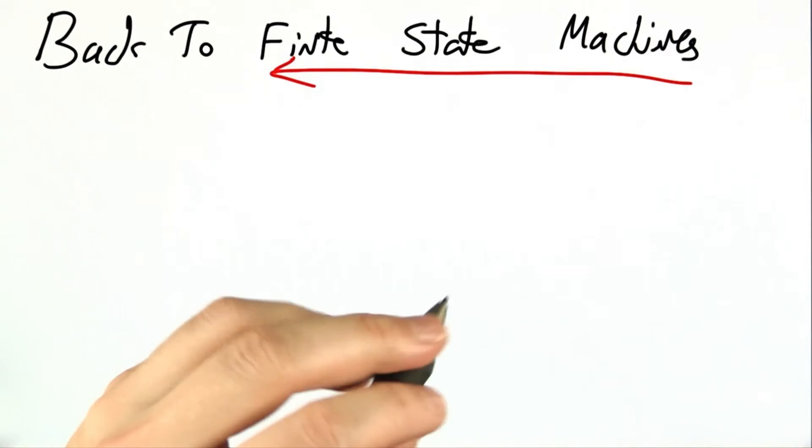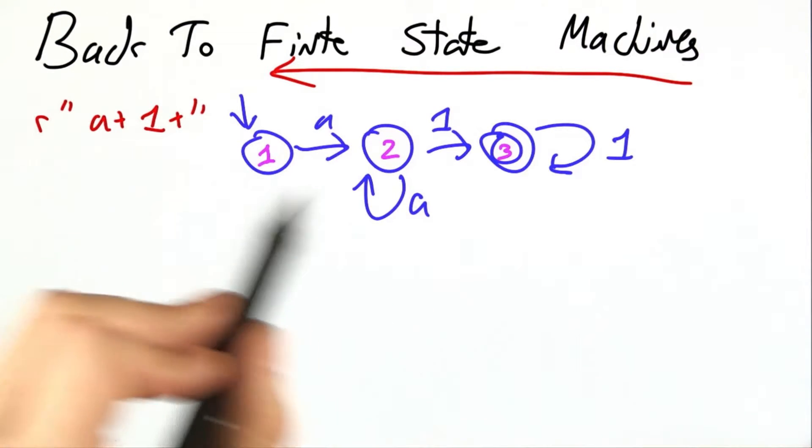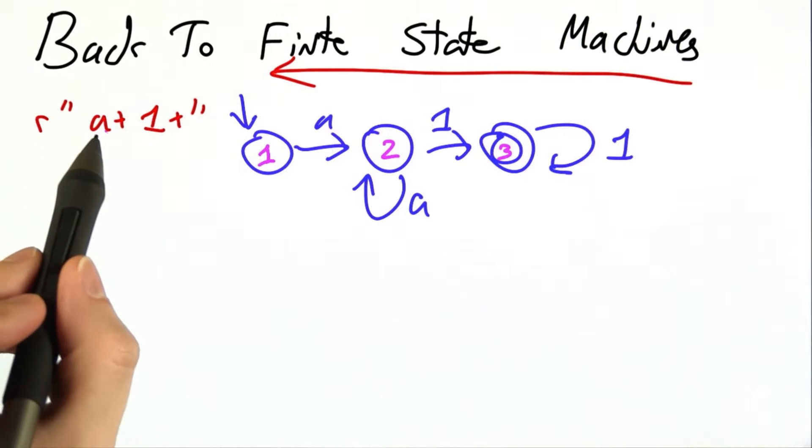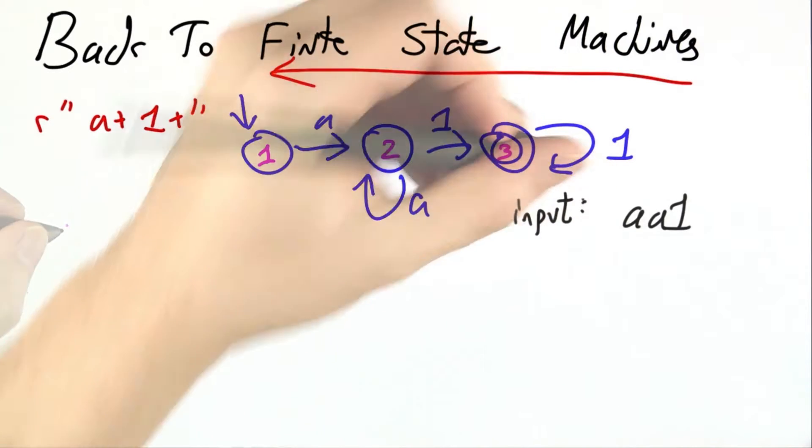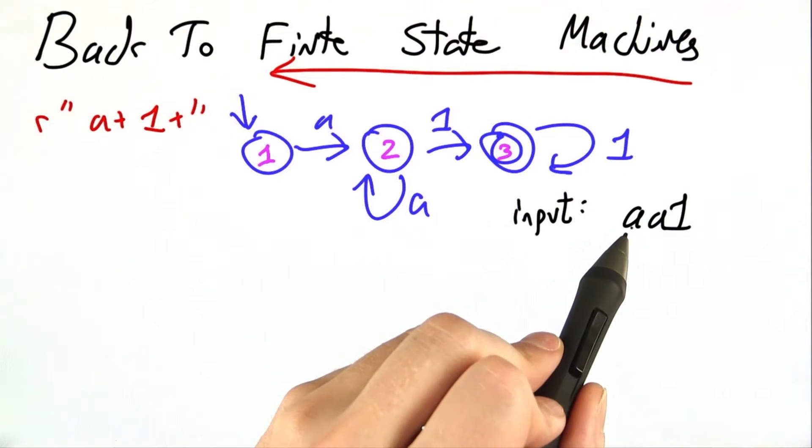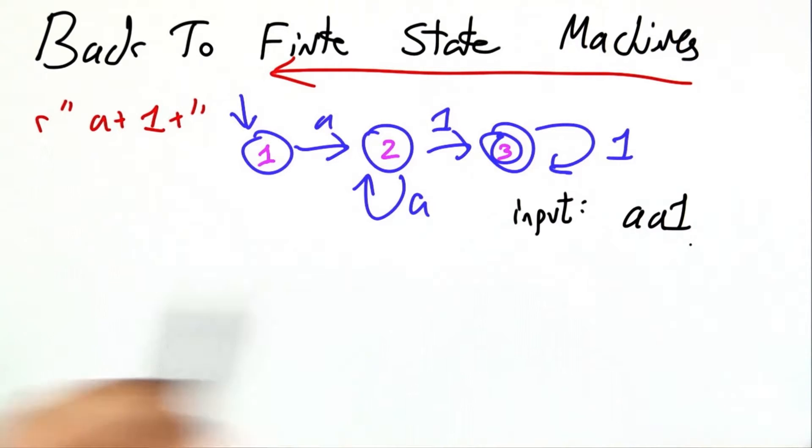Let's zoom back to finite state machines at 88 miles an hour. Here's a finite state machine that corresponds to the regular expression A+1+. Let's just verify that by tracing out the input AA1 on this finite state machine.